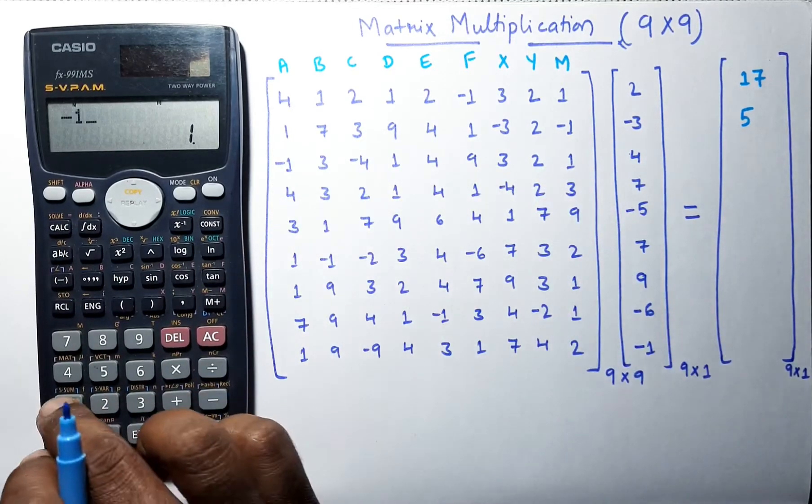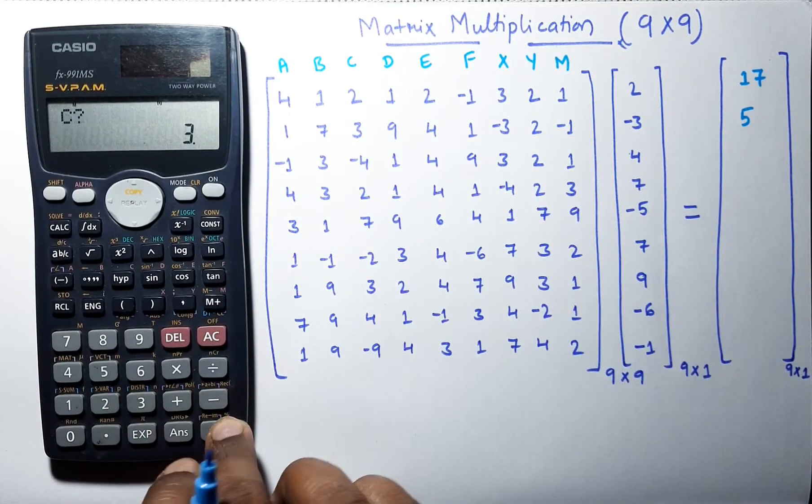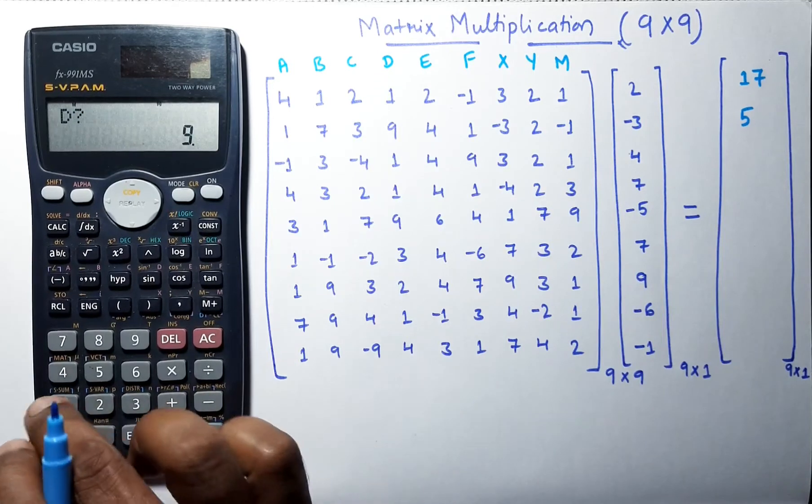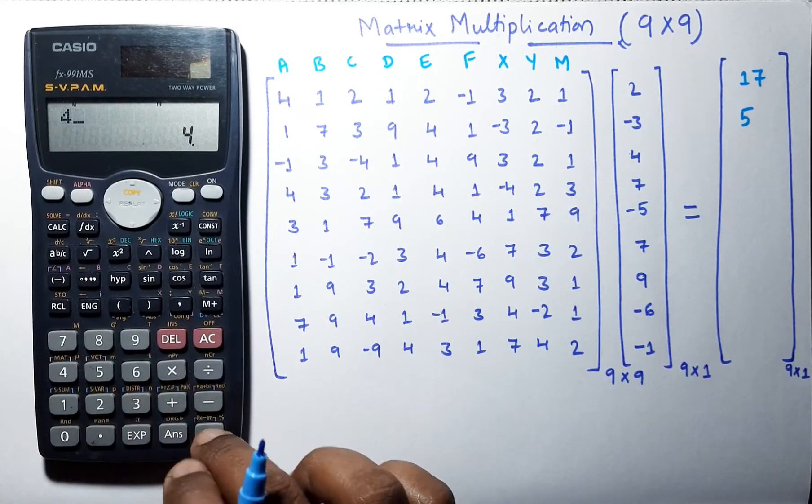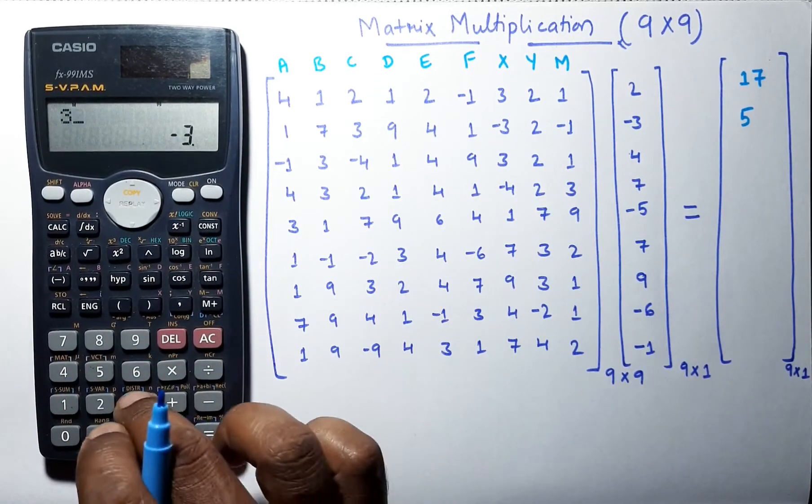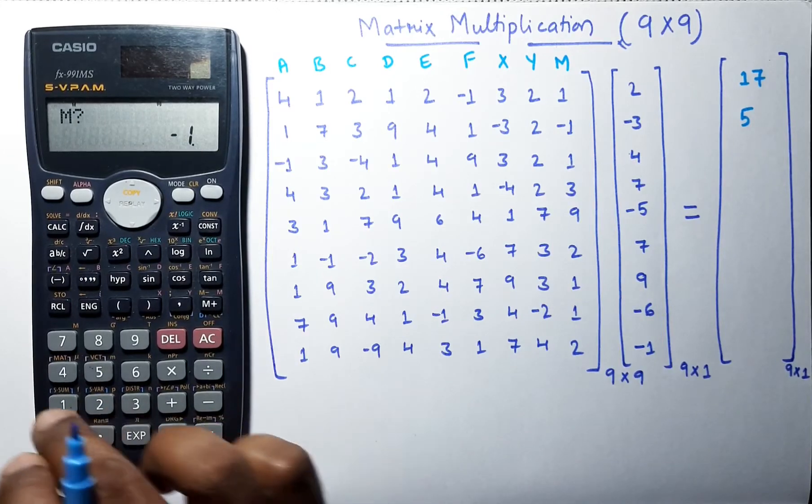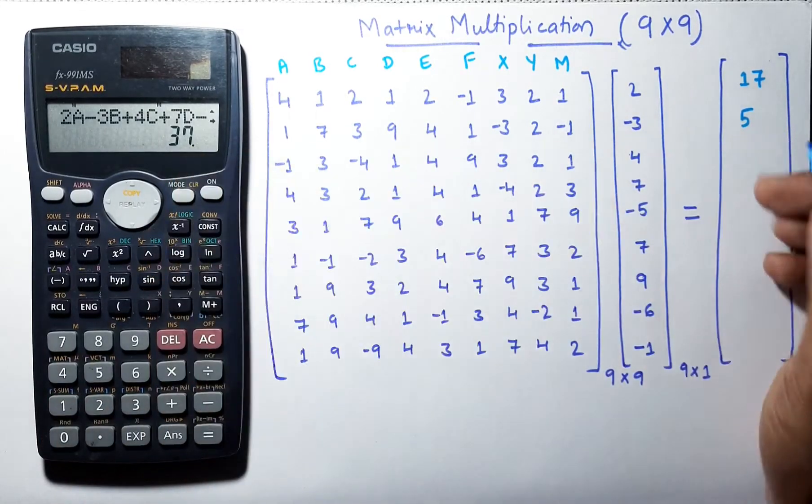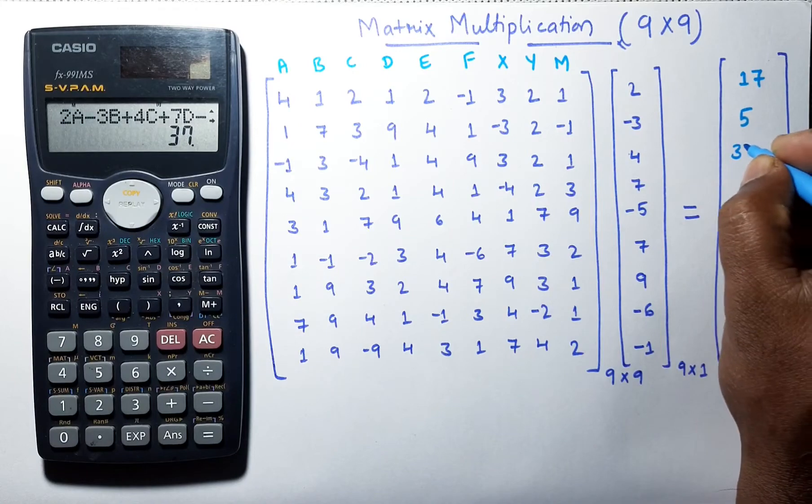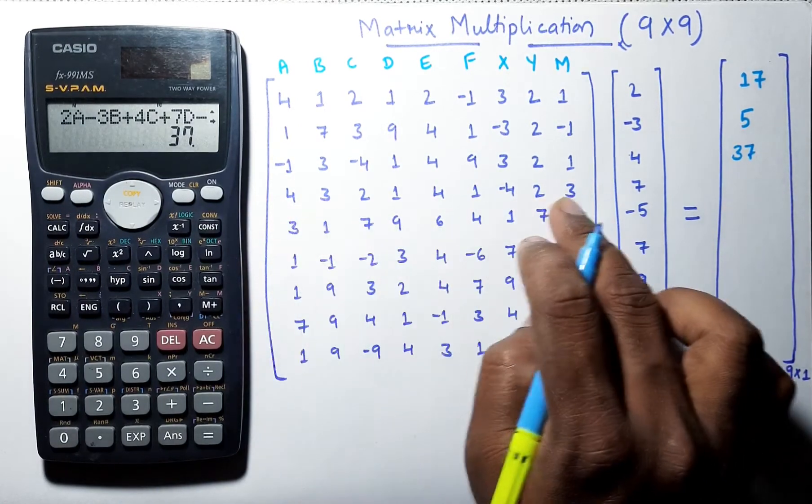Let us continue our calculation. 3, minus 4, 1, 4, 9, 3, 2, 1, and we are getting the next answer as 37.